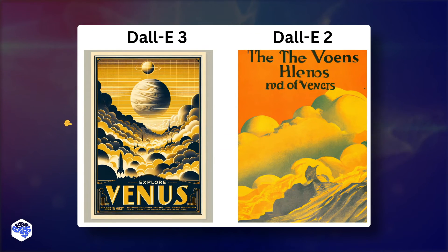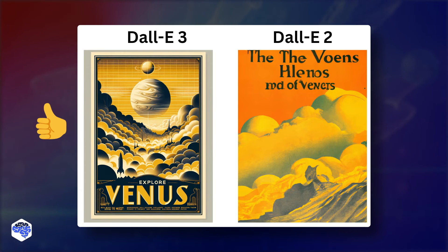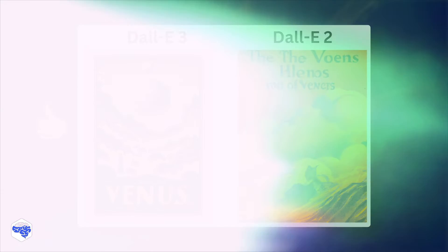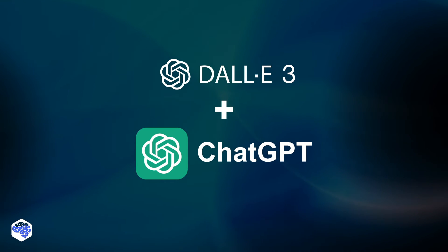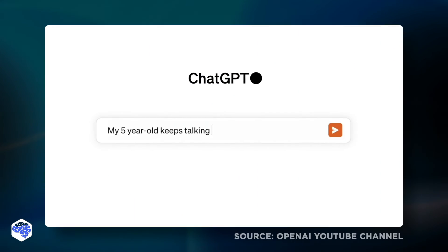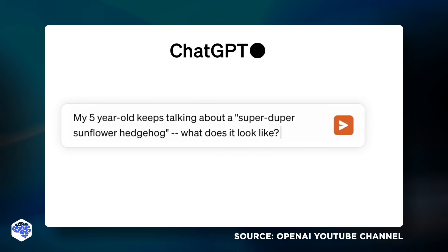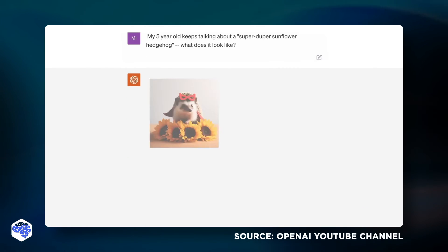DALL-E 3 also performs better in text integration within the image, being able to adjust the text to the overall image style and integrate it organically. And a game-changing feature of DALL-E 3 is its integration with ChatGPT, which enables it to refine prompts easily and streamline the creative process overall.